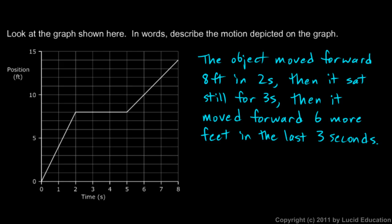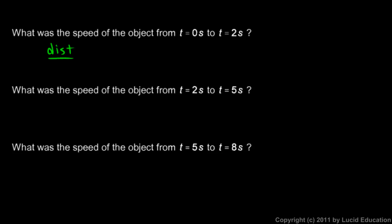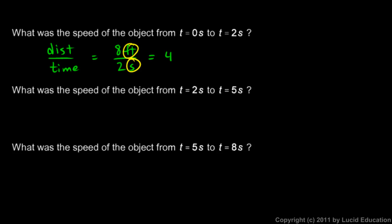That's a clear verbal description of the motion shown on the graph. Now we can use the graph to answer questions numerically — specifically the speed at various times. During the first two seconds, the distance covered was eight feet: at time zero it was at position zero, and at two seconds it was at position eight. Speed equals distance divided by time: eight feet divided by two seconds equals four feet per second.